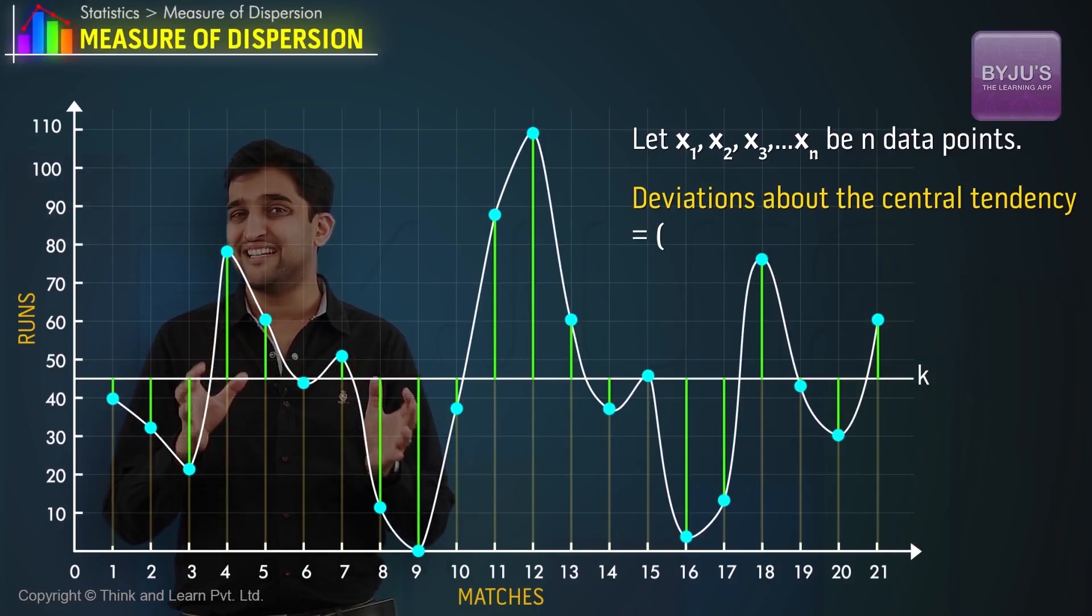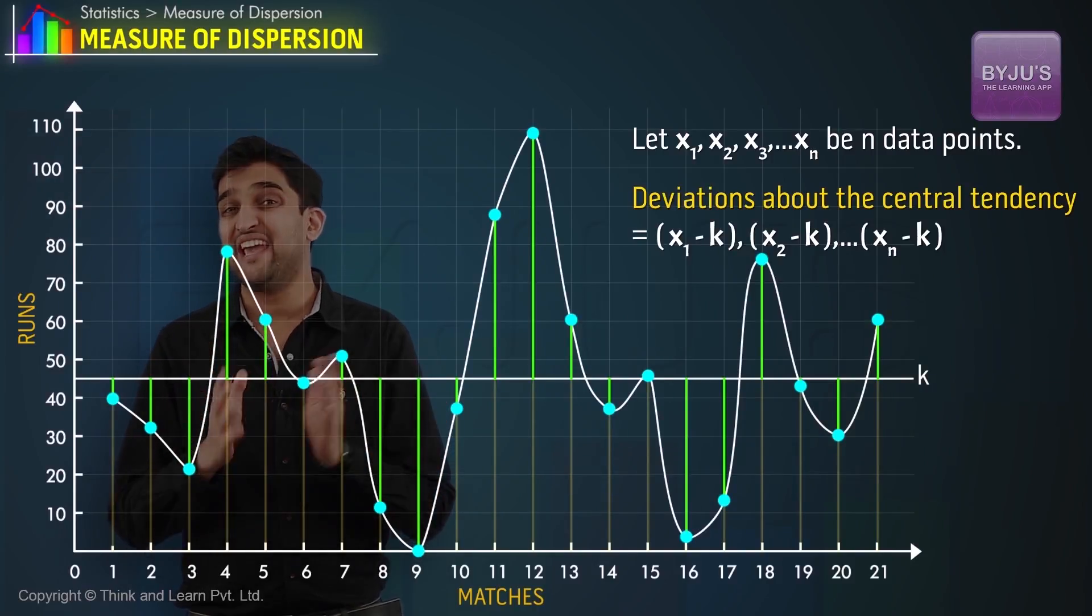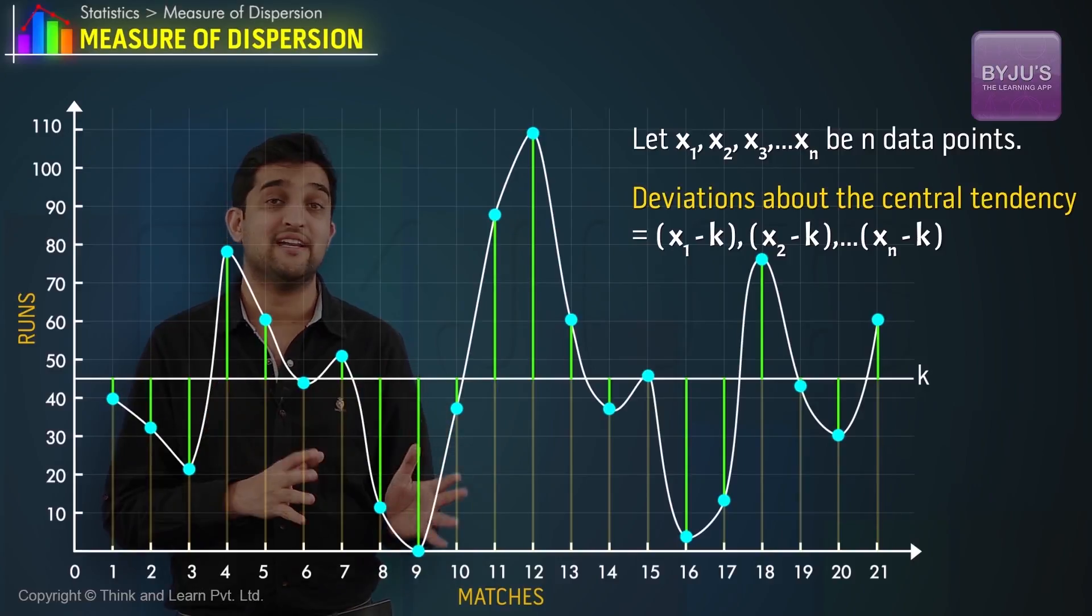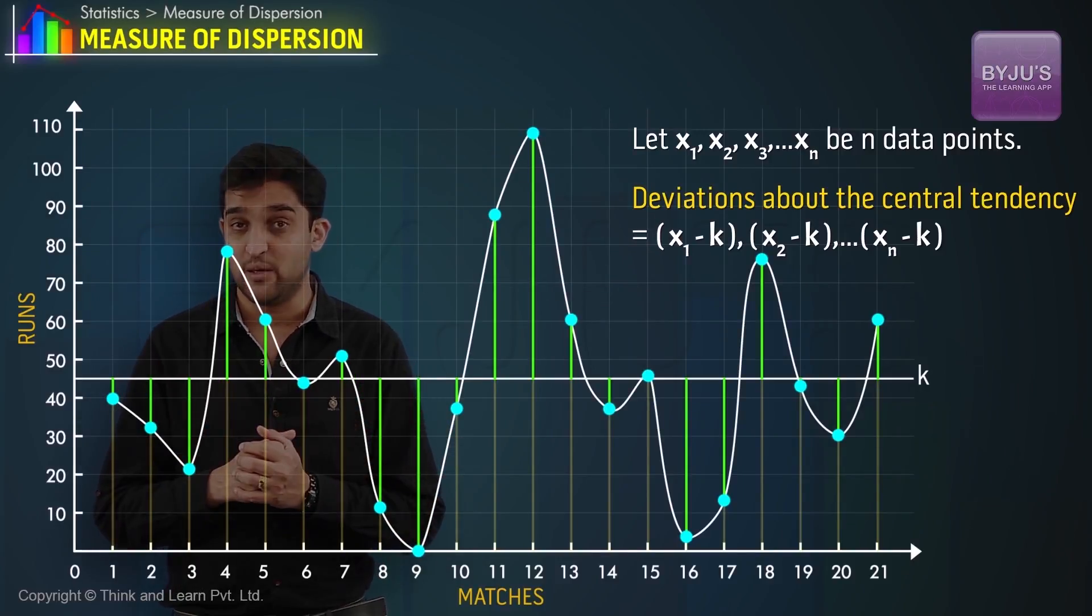The deviation about the central tendency will now be x1-k, x2-k, so on until xn-k.